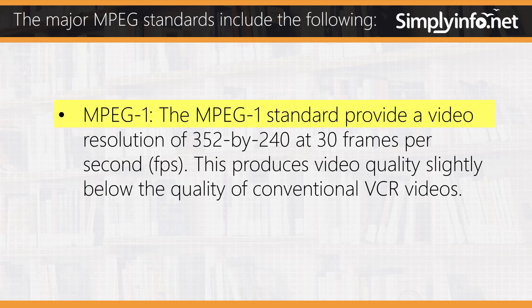MPEG-1: The MPEG-1 standard provides a video resolution of 352x240 at 30 frames per second. This produces video quality slightly below the quality of conventional VCR videos.